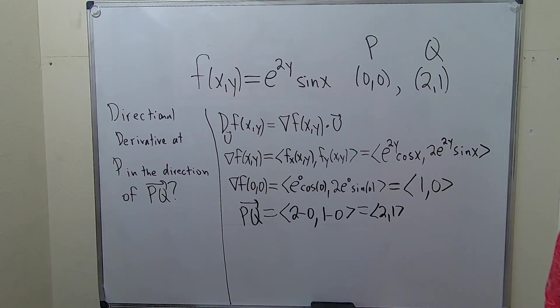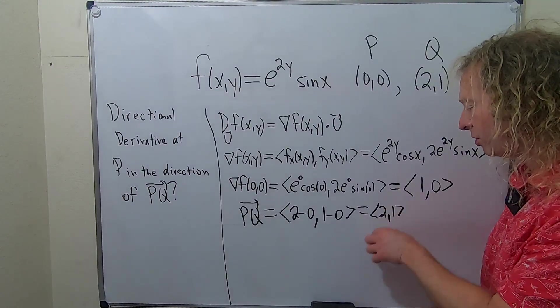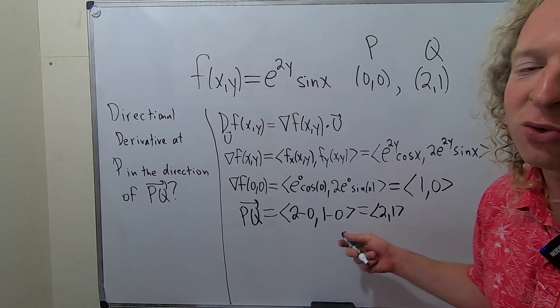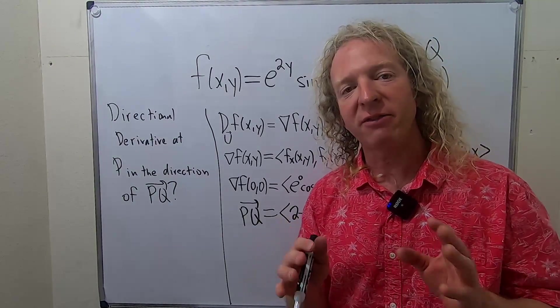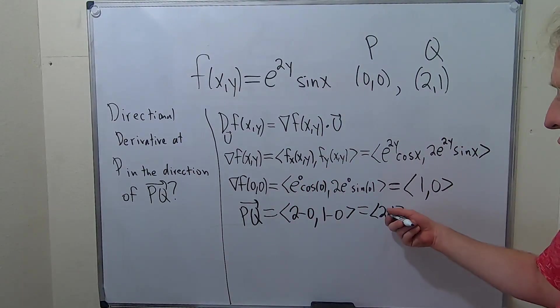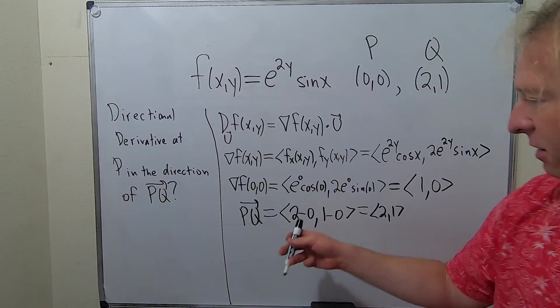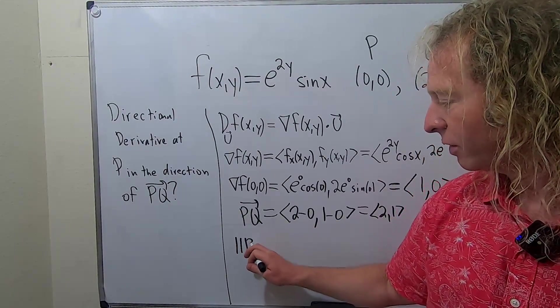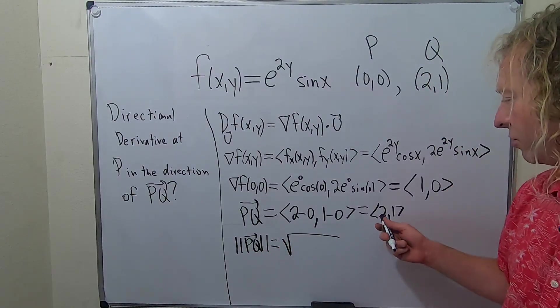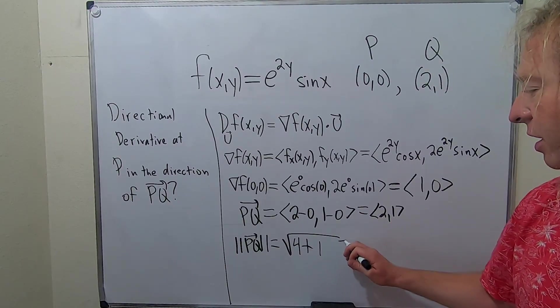Now, this needs to be a unit vector. A unit vector is a vector that has magnitude 1. In order to turn this into a unit vector, we're going to find the magnitude of this and divide this by its own magnitude. In other words, we're going to normalize it. Whenever you take a vector and you turn it into a unit vector, it's called normalizing that vector. Let's find the magnitude of PQ. This is the square root of, you square the 2, so you get 4, plus, you square the 1, so you get 1. So, you get the square root of 5.